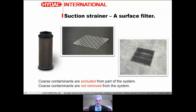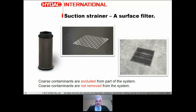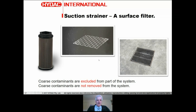The suction strainer is what we call a surface filter - it simply filters across one single surface. The best way to explain it is like a drain grate: if you want to keep rocks or tennis balls out of a drain, you put a mesh there that is smaller than the thing you're trying to exclude. But you're not removing the contaminant from the environment - you're just keeping it out of where you don't want it. That's the role of a suction strainer.